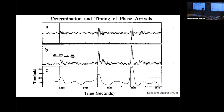You have some seismic data and you basically run a couple of moving averages on it — one that's really short, designed to track the running signal level across the data set, and then a longer one designed to track the running noise level.